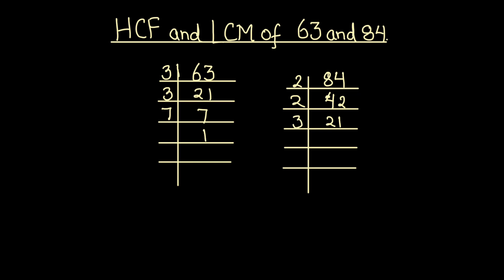Now 21 is an odd number, it is divisible by 3. 3 times 7 is 21 and 7 times 1 is 7. So both the numbers are fully divided.